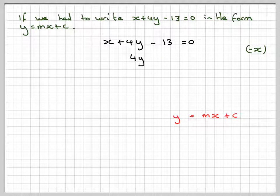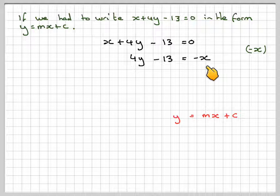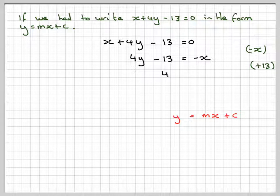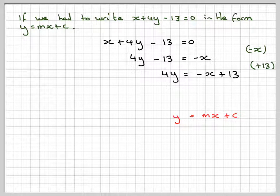On this side, I'm going to get 4y - 13, and on this side we're going to get -x. Then I'm going to add 13 to both sides. So I'm going to get 4y = -x + 13.